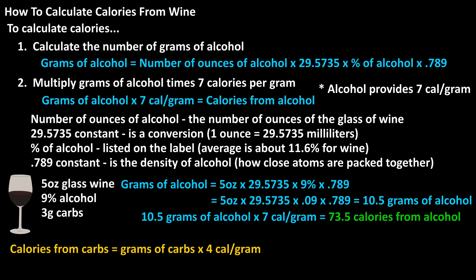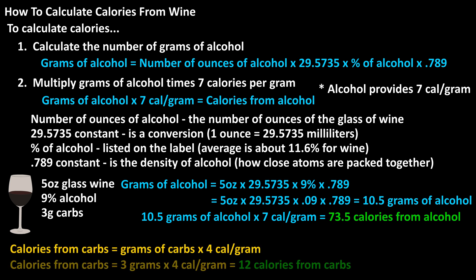Carbohydrates provide 4 calories per gram, so 3 grams times 4 calories per gram equals 12 calories from carbohydrates. Adding the 73.5 calories from alcohol with the 12 calories from carbohydrates gives us a total of 85.5 calories for this glass of wine.